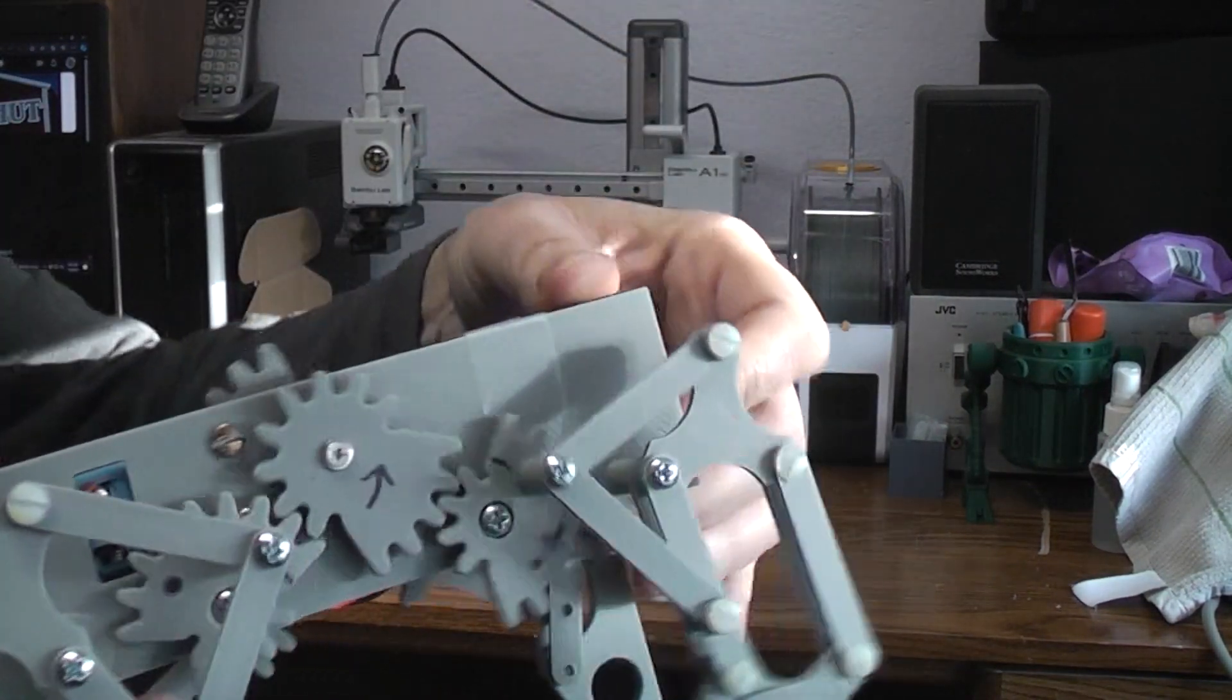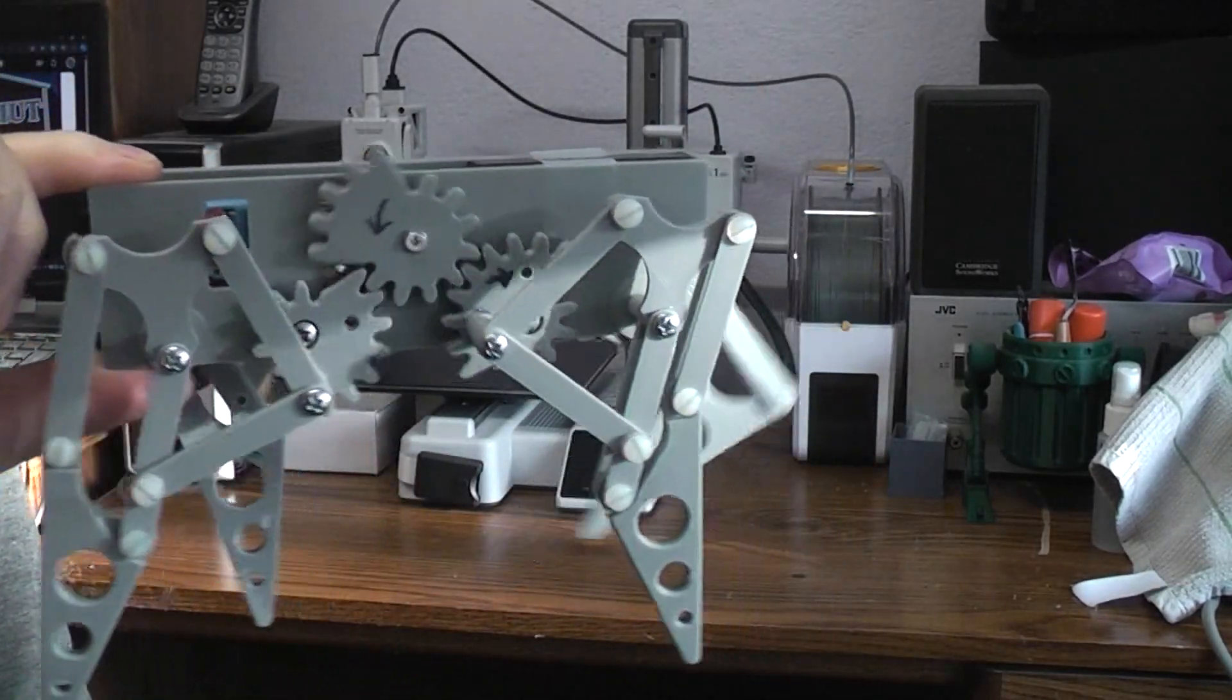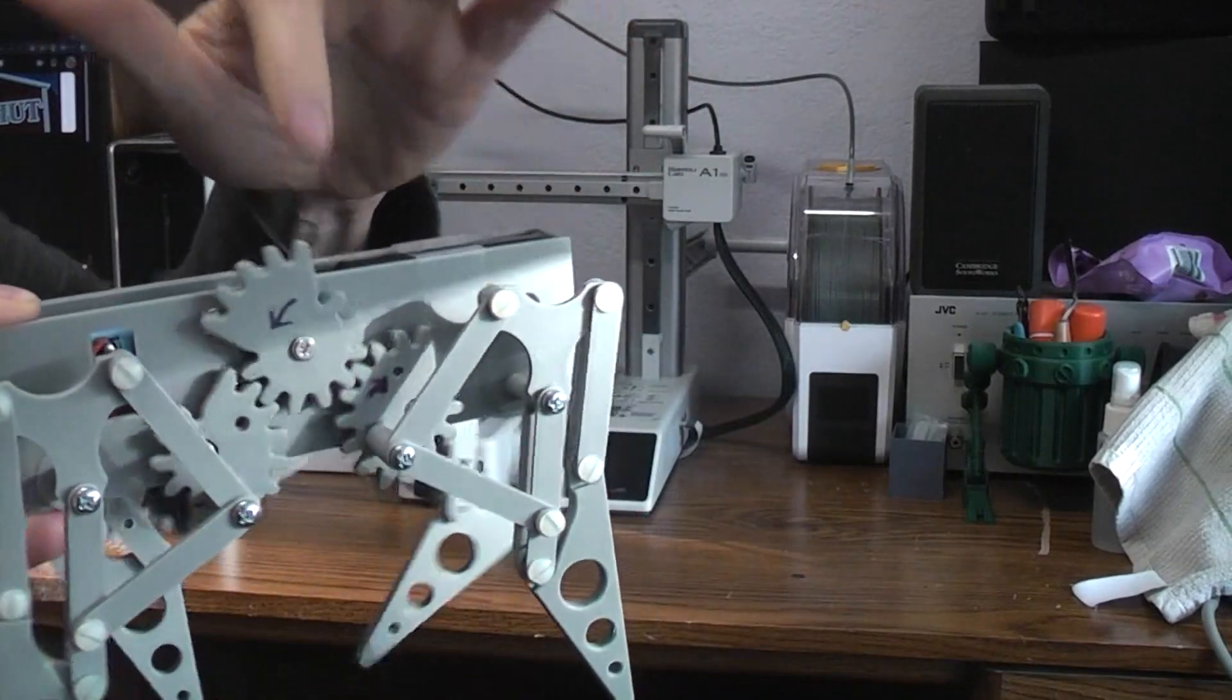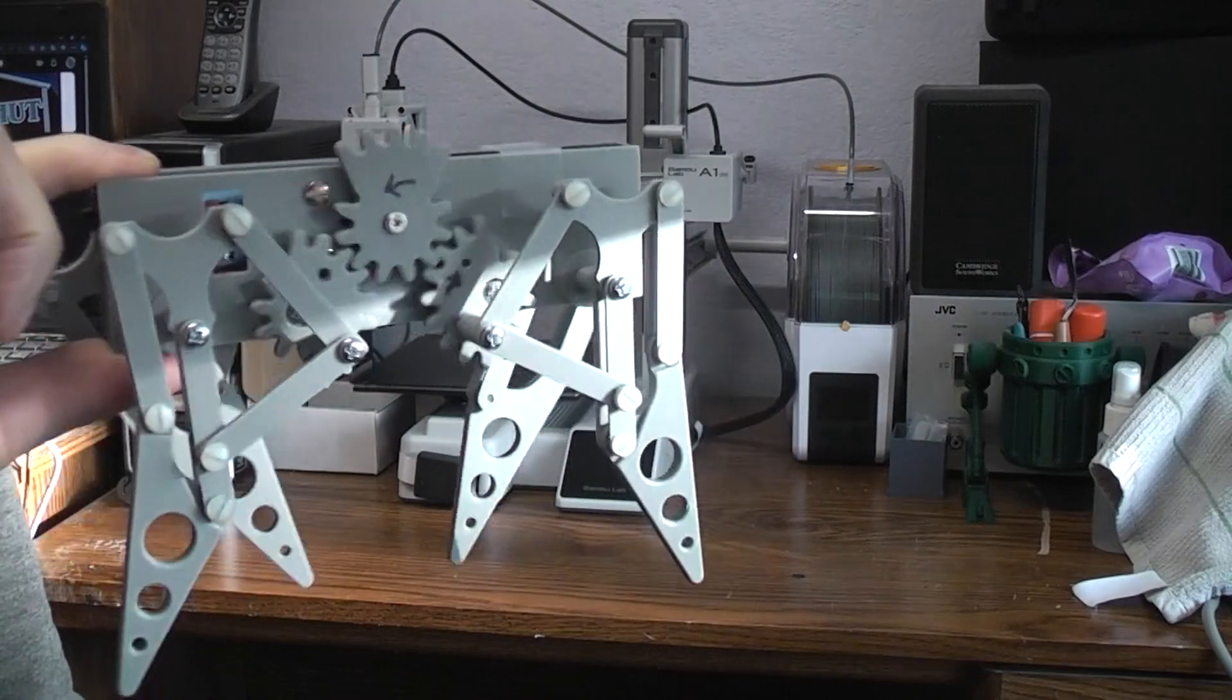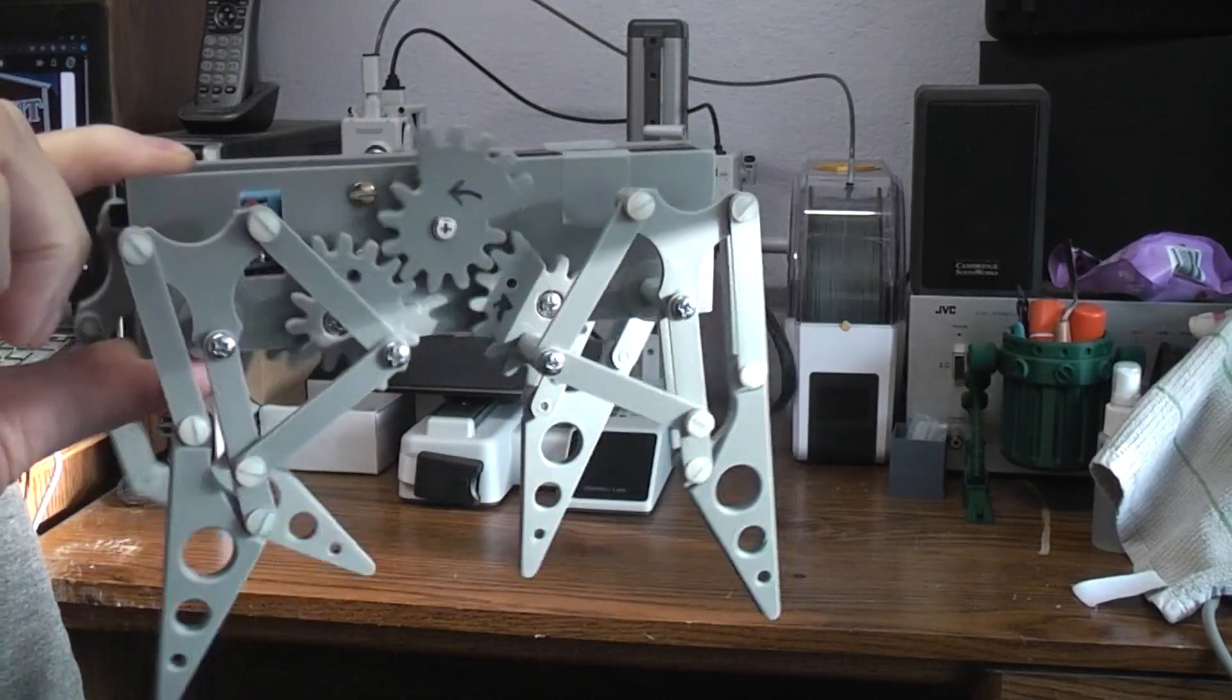What you're looking at here, if I can keep my hands from jamming up the legs, is a quadruped, four legs, using the fast-slow gear ratio. The leg design is basically the Theo Janssen Strandbeest leg design, slightly modified.